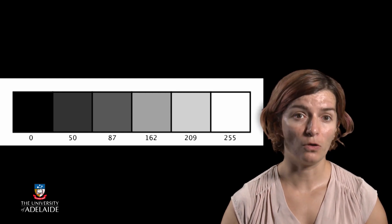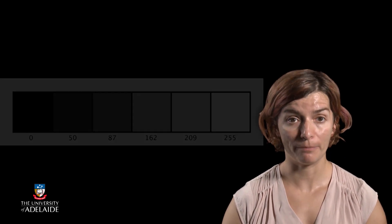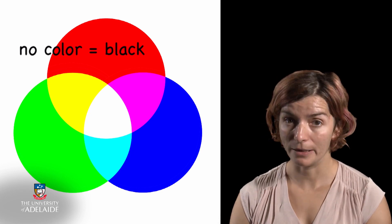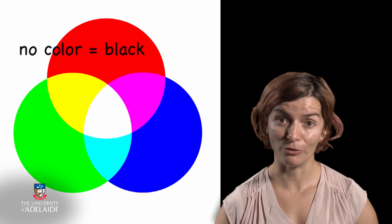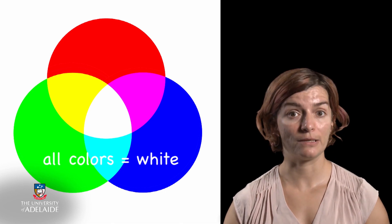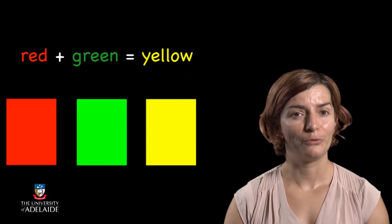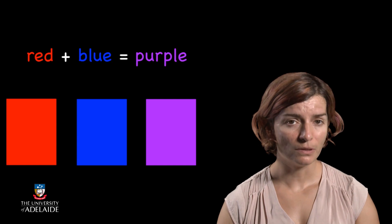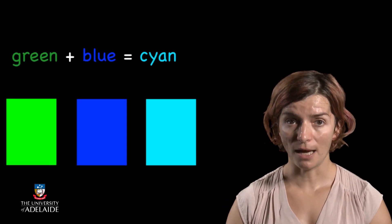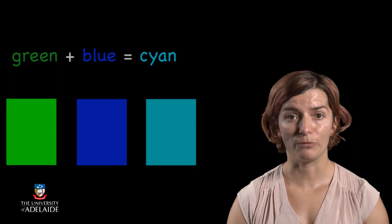Digital colors are also constructed by mixing three primary colors — red, green, and blue — following some rules. No colors equals black, like the 0 from fill. All colors equals white, similar to 255. Red plus green equals yellow. Red plus blue equals purple. Green plus blue equals cyan, which is a kind of bluish green. And red plus green plus blue equals white.